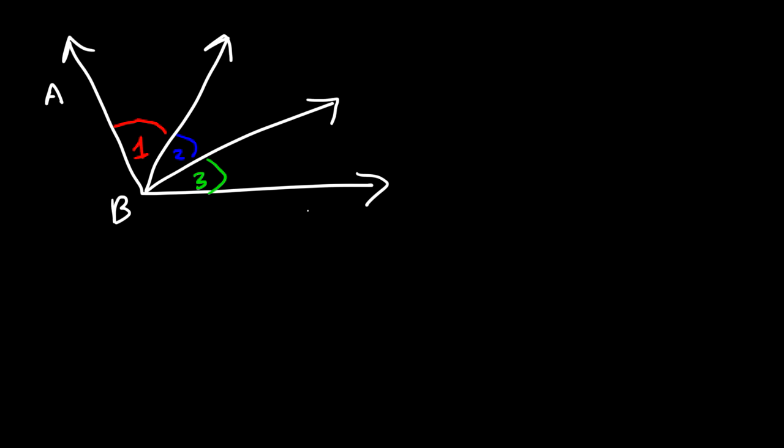So let me give you an example problem. Let's call this angle one, which extends between the first two rays. And let's say this is angle two and angle three. And let's say this is A, B, C, D, and E. Starting with angle one, what are two ways or two other ways in which we can name angle one?